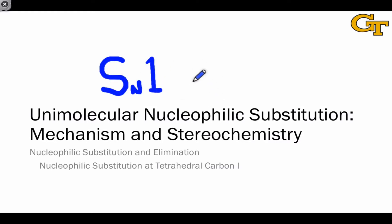SN1 is a two-step process involving dissociation of the leaving group first from the electrophile, followed by association of the nucleophile to a carbocationic intermediate, and appreciating this intermediate is key to understanding the SN1 reaction.